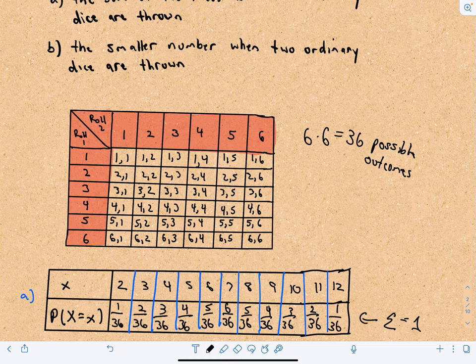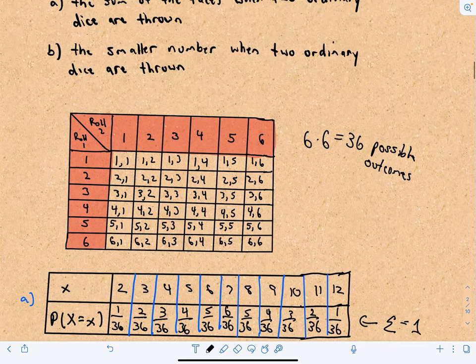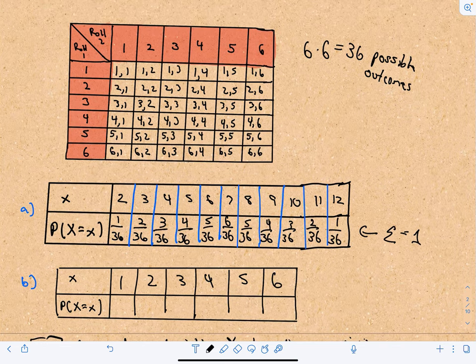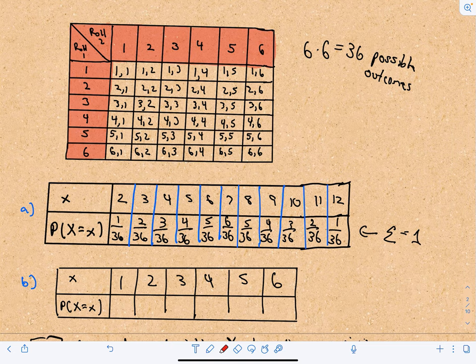Now let's look at the probability distribution for the smaller number when two ordinary dice are thrown. The smaller number can be 1, 2, 3, 4, 5, or 6. How many ways can the smaller number be 1? We could get (1,1), (1,2), (1,3), (1,4), (1,5), (1,6), (2,1), (3,1), (4,1), (5,1), or (6,1) — that's 11 outcomes, so P(smaller=1) = 11 out of 36.